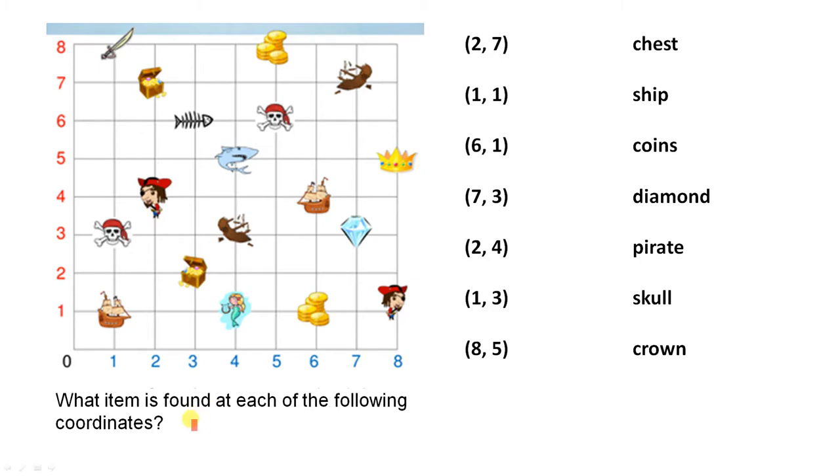What item is found at each of the following coordinates? So we're going to give the coordinates now and then we're going to see what is located at that coordinate. So let's start with this one. Two, seven - the chest. One, one is the ship.